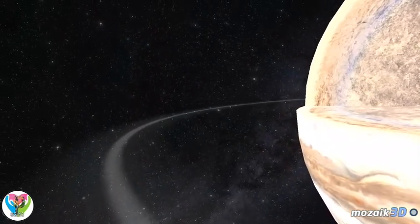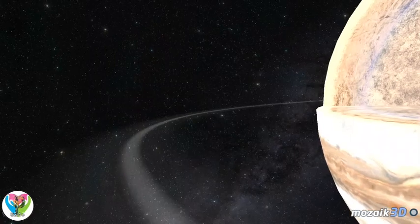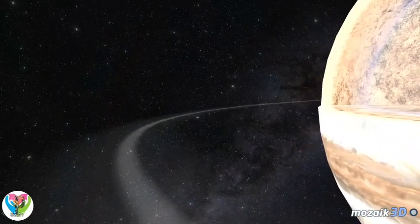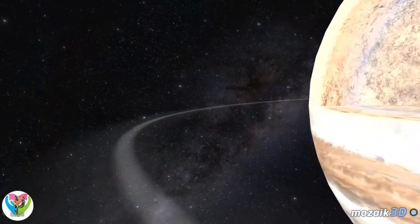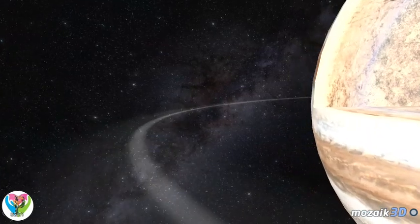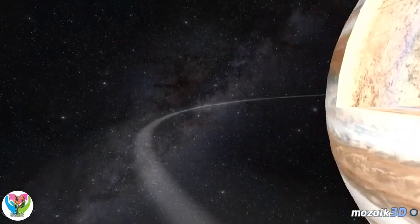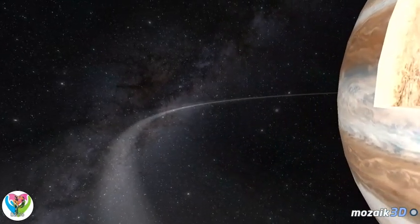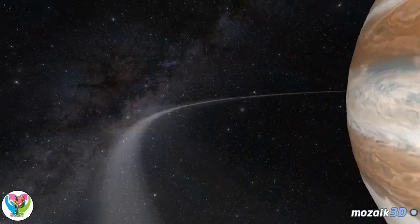The Great Red Spot is a vast anticyclonic storm of about 30,000 kilometers in length and 14,000 kilometers in width. The Earth would fit inside. It was observed as early as 300 years ago.